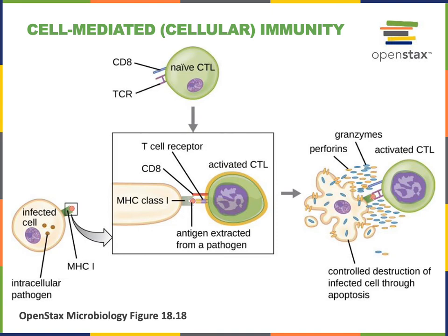In cell mediated or cellular immunity, the effector cells are cytotoxic T cells that have the CD8 T cell receptor complex and are activated by antigen presented with an MHC1 protein by an infected cell. When a cell of our body is infected with an intracellular pathogen such as a virus or intracellular bacteria, the infected cell will display antigen from that pathogen using the MHC1 protein, activating a cytotoxic T cell that can bind to that antigen. Once activated, the cytotoxic T cell releases its perforins and granzymes leading to the controlled destruction of the infected cell through apoptosis.